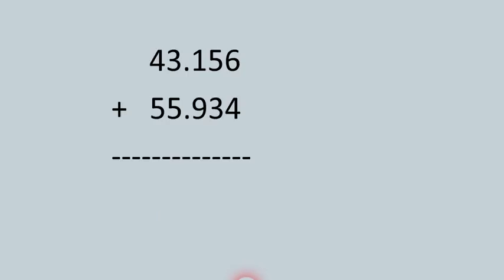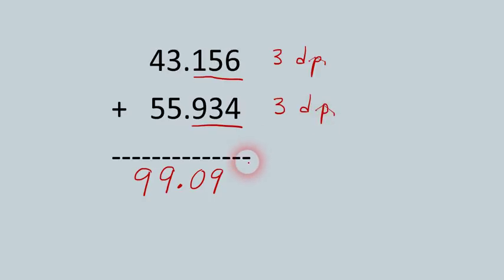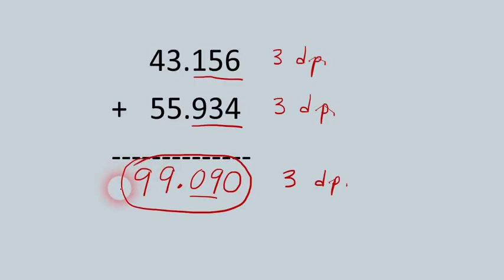Here's a simple math problem: 43.156 plus 55.934. If you type that into your calculator you get an answer of 99.09. Now we look at the decimal places. The first number has three decimal places and the second also has three, so our answer must also have three decimal places. As written it only has two, so we add a third and write 99.090 — that's how we express the answer with the correct level of precision.